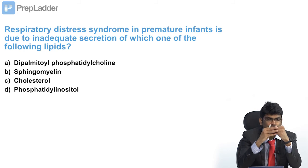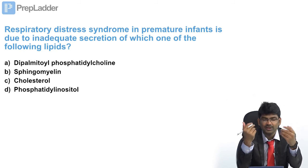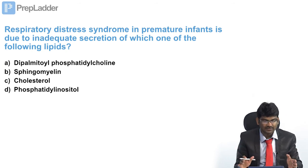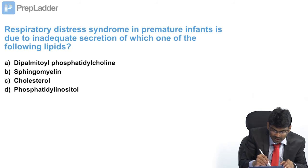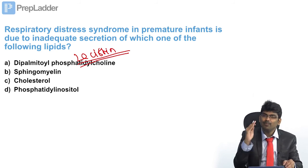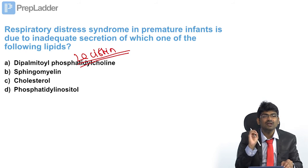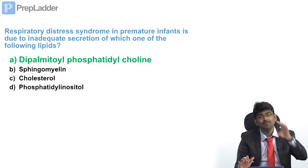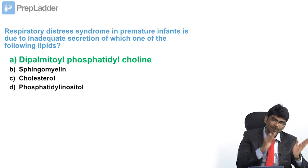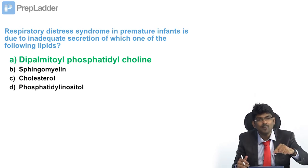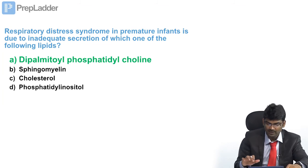Respiratory distress syndrome is due to deficiency of which of the following? They are asking which is the lung surfactant. Dipalmitoyl lecithin is the lung surfactant — it lines the alveolar membrane and normally prevents collapse of alveoli during expiration. Dipalmitoyl lecithin is a surfactant lipid. Surfactant is made up of both lipids and proteins, with certain surfactant proteins as well, but the major lipid component is dipalmitoyl lecithin.